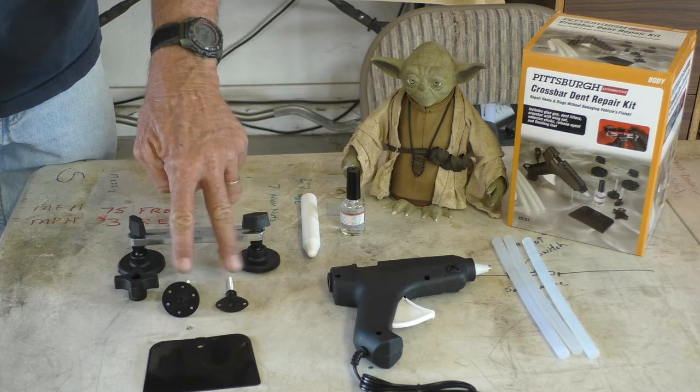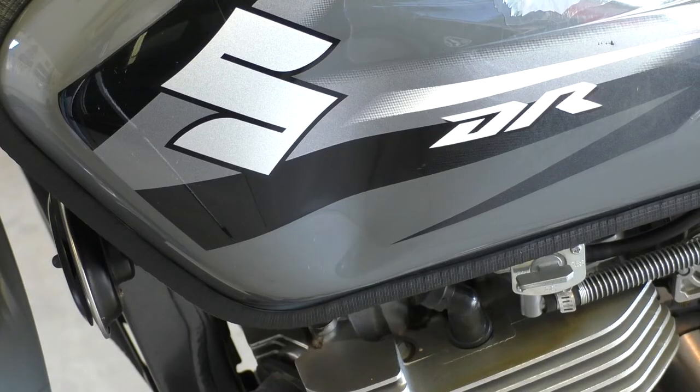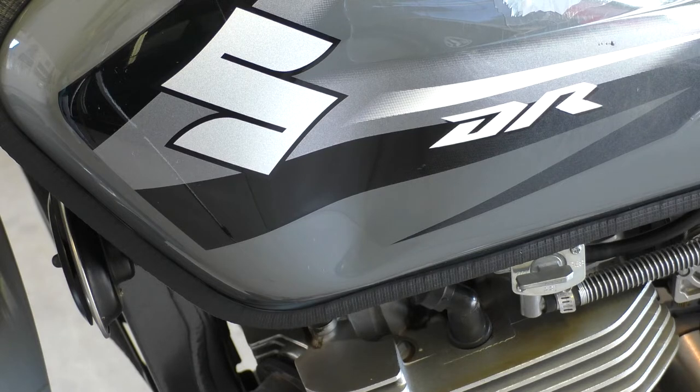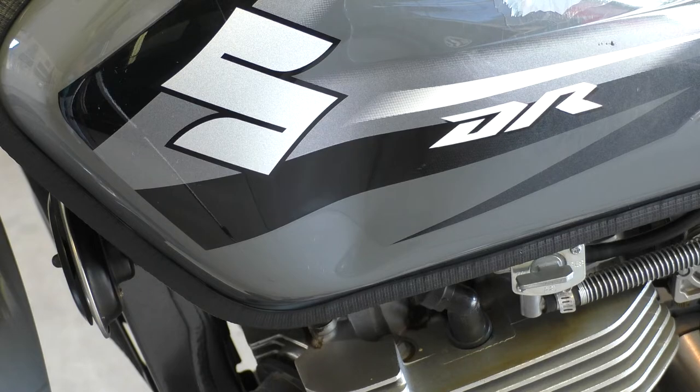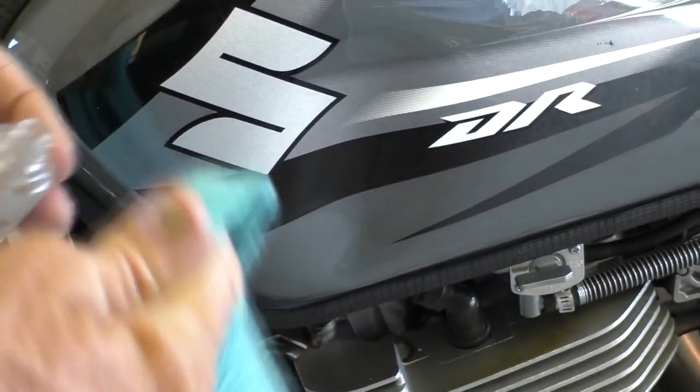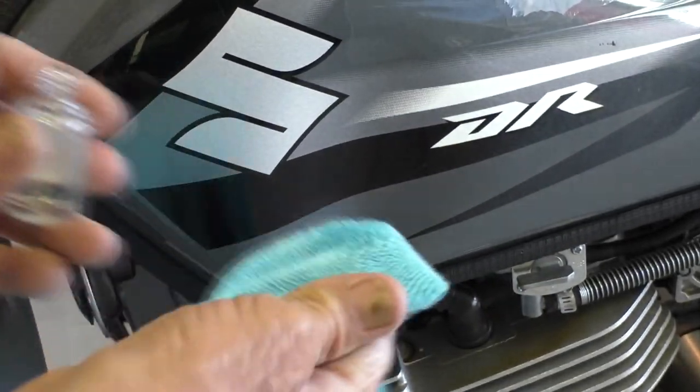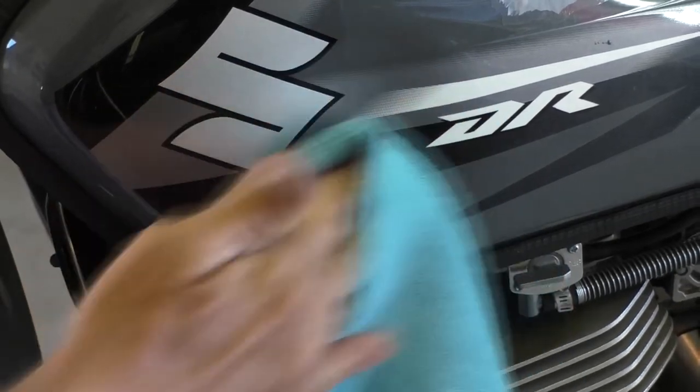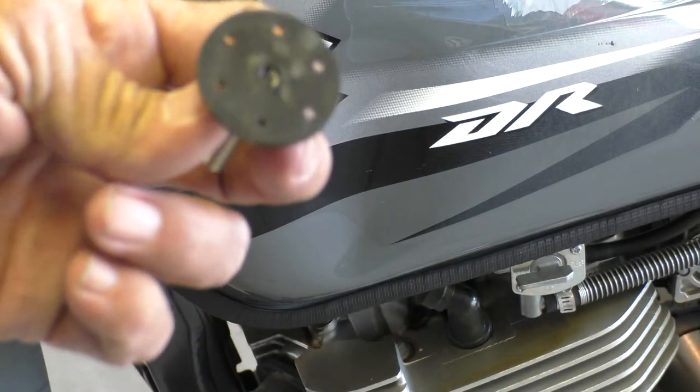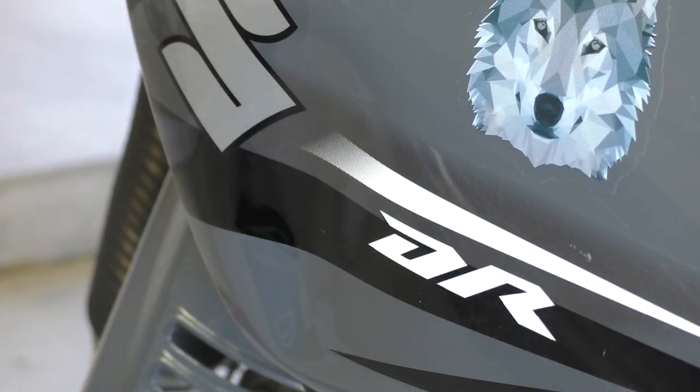First thing you're supposed to do is take that release agent and a clean cloth and wipe down the area where you're going to apply the glue. It's essentially alcohol. Clean off the dent puller with the release agent. My biggest fear is messing up my decal.